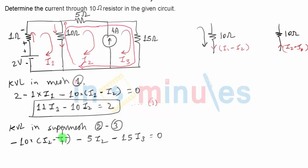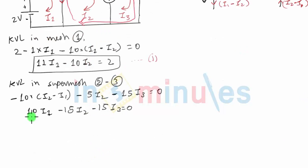If I simplify this, I get minus 10 into minus plus 10 I1, minus 10 I2, minus 5 I2 will be minus 15 I2, minus 15 I3 equal to 0. Now you can see that there's a common factor of 5 in each term. So if I divide throughout by 5, I get 2 I1 minus 3 I2 minus 3 I3 equal to 0. So this becomes my second equation.